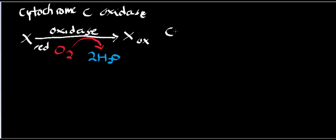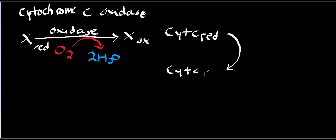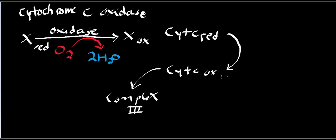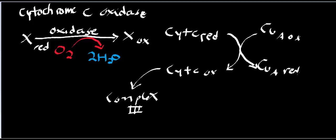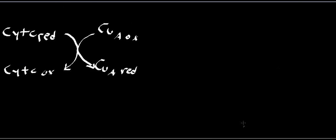Recall from the last video that cytochrome C was reduced with one electron. Cytochrome C is going to get oxidized back to its original form, and then go back to complex 3 to pick up another electron. The initial electron acceptor is a binuclear copper center — we designate it copper A. It's a binuclear copper A cofactor that starts in the oxidized form but initially goes to the reduced form because it picked up the one electron.